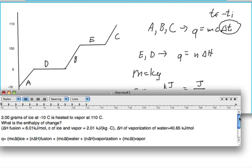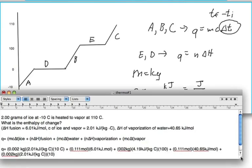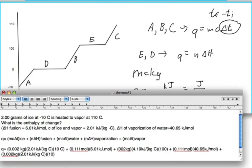Below, I substituted all the values, making sure that the mass in grams is converted to kilograms and my specific heat capacity of ice, water, and vapor has been changed to kilojoules per kilogram degrees Celsius.